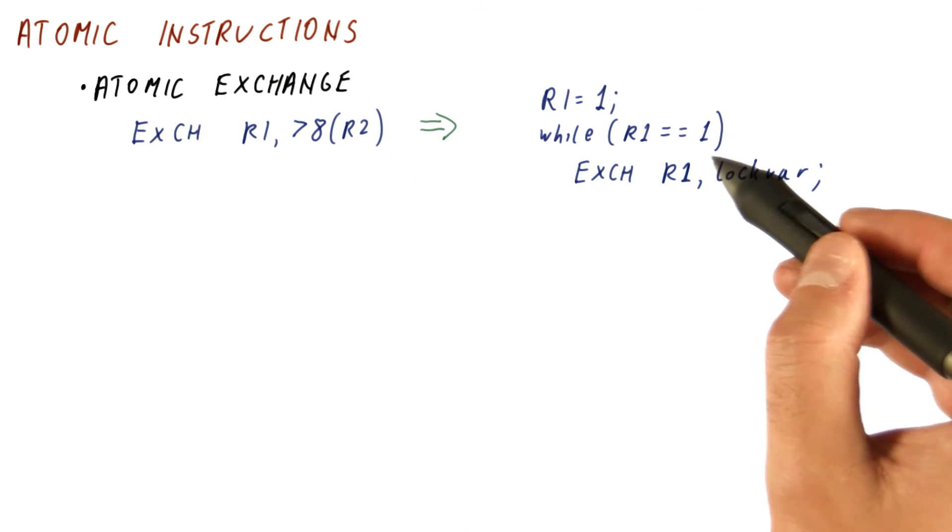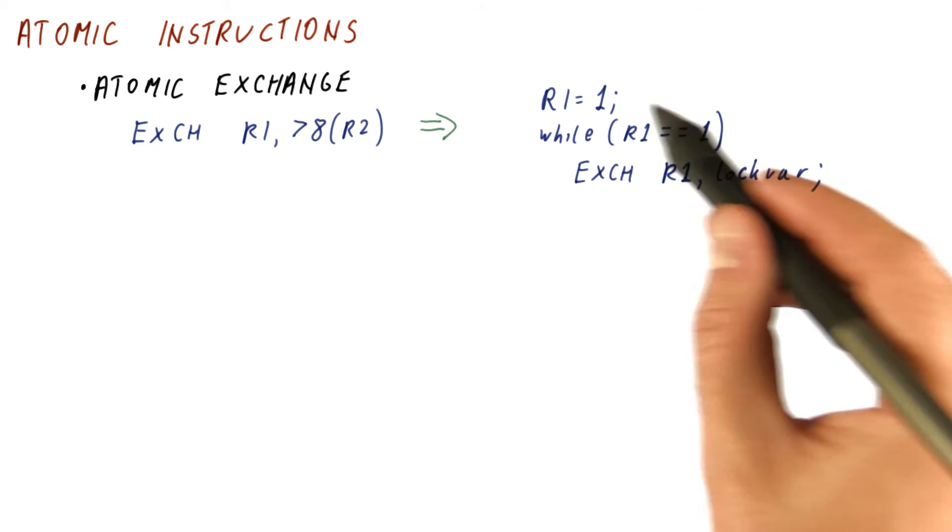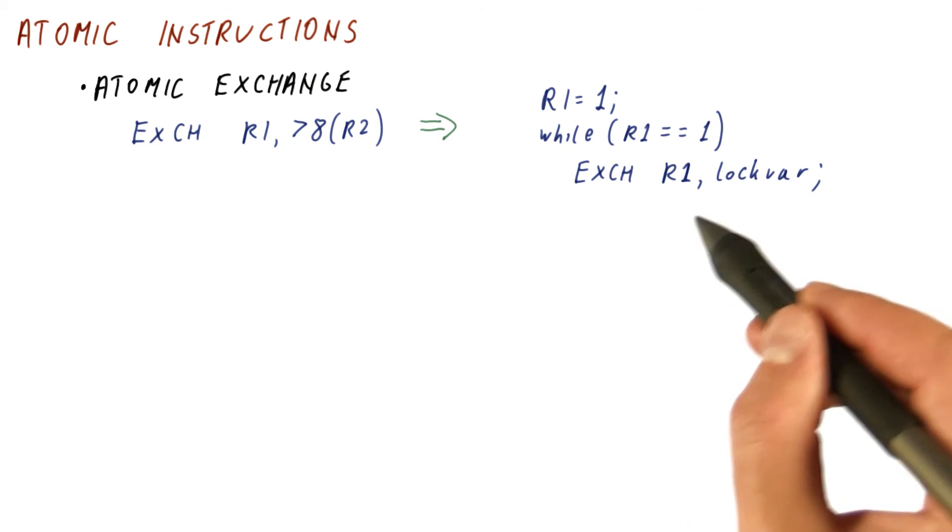So atomic exchange gives us this read and write at the same time behavior that we want to implement our locks. And as you can see, the lock function can be now very simple.